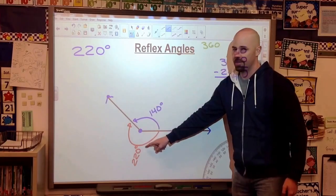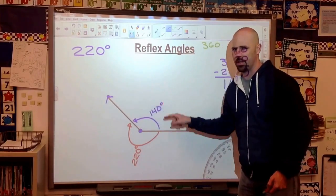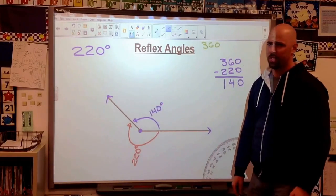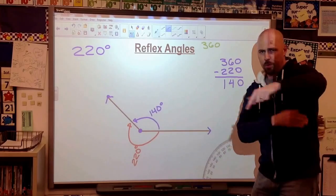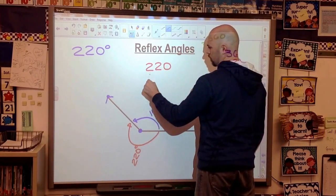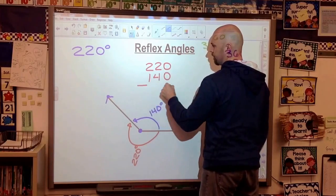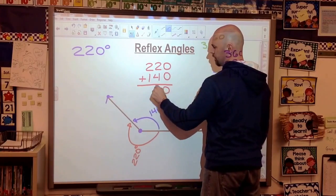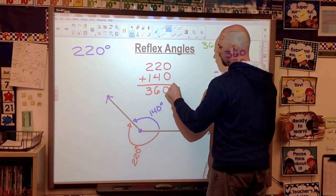And we said both sides of this angle, because we're making a circle here, should add up to 360 degrees, because that's spinning all the way around. Let's add them together. And there we have it.